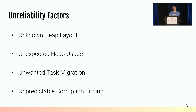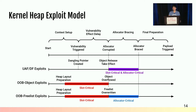We concluded four factors for exploit failures. A non-initial heap layout can fail exploits that require a specific heap layout. Unexpected heap usage from other processes or kernel components can also fail exploits. Additionally, the scheduler — which causes task migration and delayed operations in the Linux kernel — causes unpredictable corruption timing and contributes to exploit failures. Putting these pieces together, we have the full kernel heap exploit model. Based on the model, it is intuitive that exploit unreliability is related to the length of the critical phases — if we can reduce the length of the critical phase, we can improve exploit reliability.